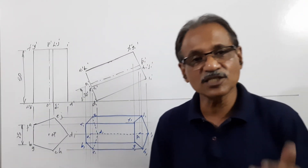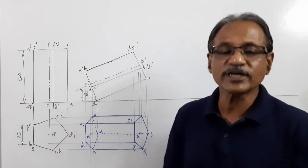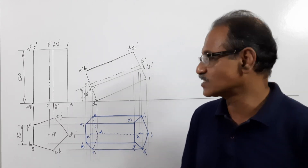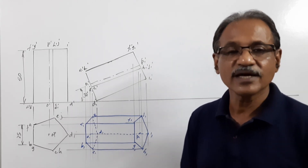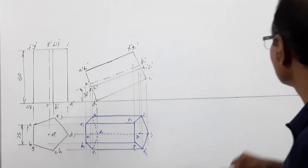The question says the axis is 30 degrees to HP and 40 degrees to VP. That means phi of the axis is 40 degrees. You have to find out beta.